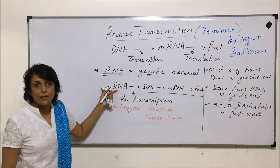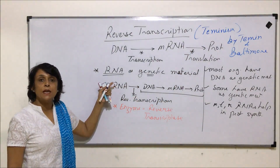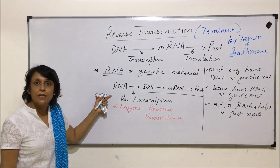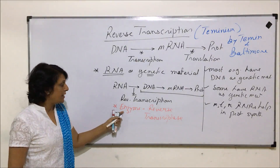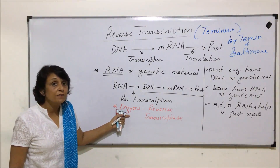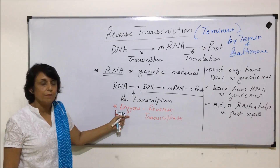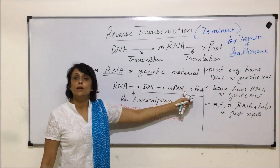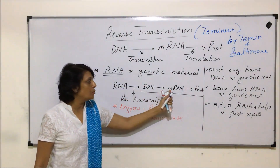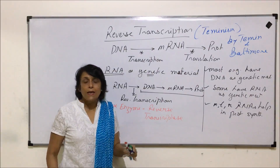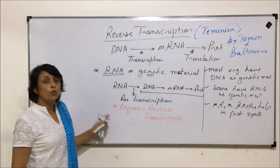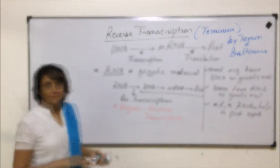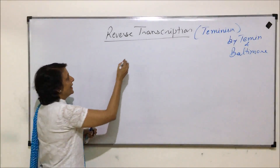Whichever organism has RNA as genetic material — examples like TMV, and even HIV has RNA as genetic material — they always have the reverse transcriptase enzyme, which helps in formation of DNA, and then the regular central dogma: DNA to mRNA and mRNA to protein. Let us understand this by a simple diagrammatic expression.